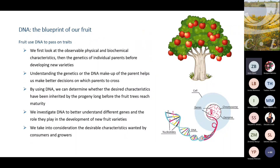This helps a lot because in many crops it takes about 10 years before you can see the first fruit. You've planted thousands of trees, but you can plant fewer, being sure the attribute is actually in that plant. We also investigate DNA to better understand different genes and the role they play in the development of new fruit varieties. Currently we have the idea that only 3% of our DNA is used by an individual to express its attributes, so what's happening to the rest is still being investigated.